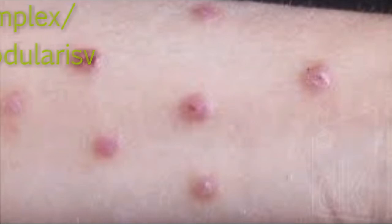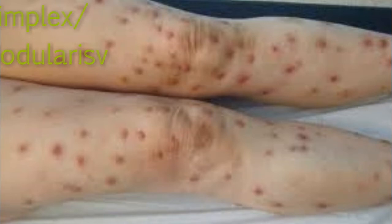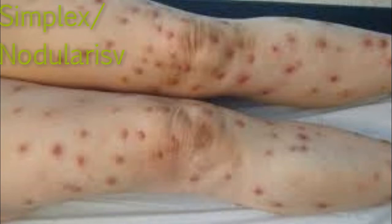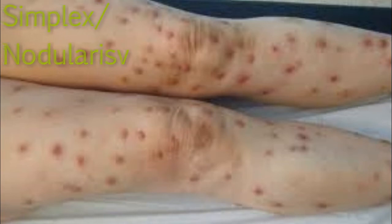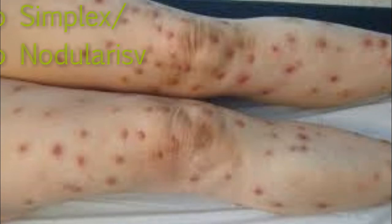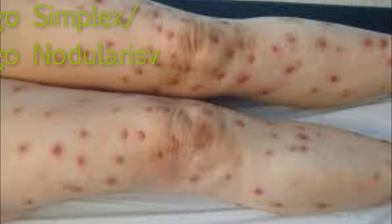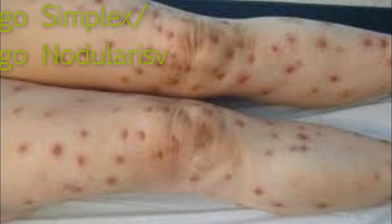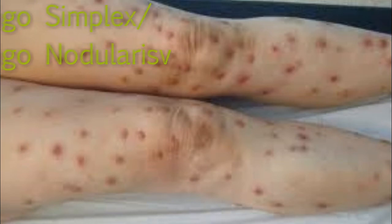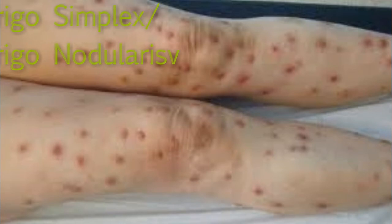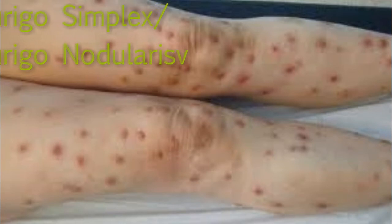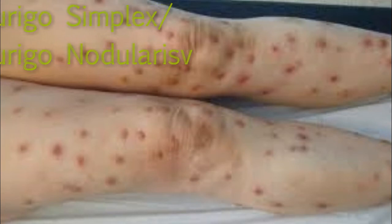The differential diagnosis includes: lichen planus prurigo, lichen simplex chronicus, chronic dermatitis, pemphigus vegetans, blastomycosis, chromomycosis, blastomycosis-like pyoderma, bromoderma, iododerma, pseudo-epitheliomatous hyperplasia, and acanthoma fissuratum.